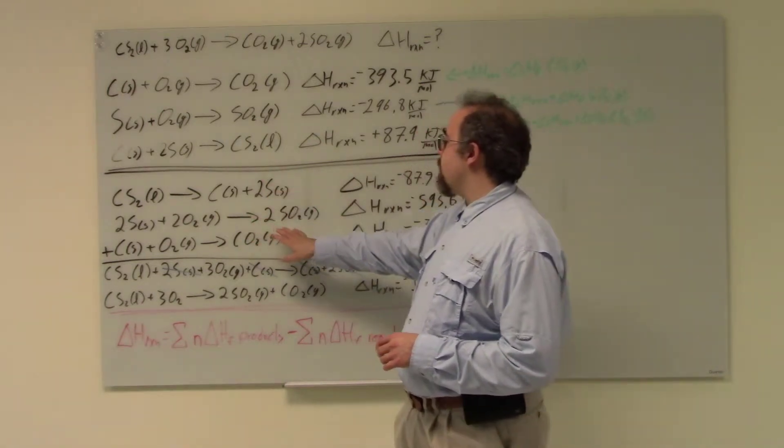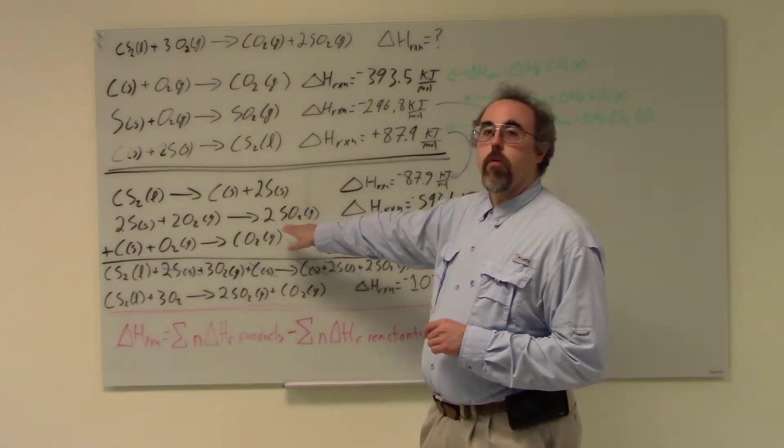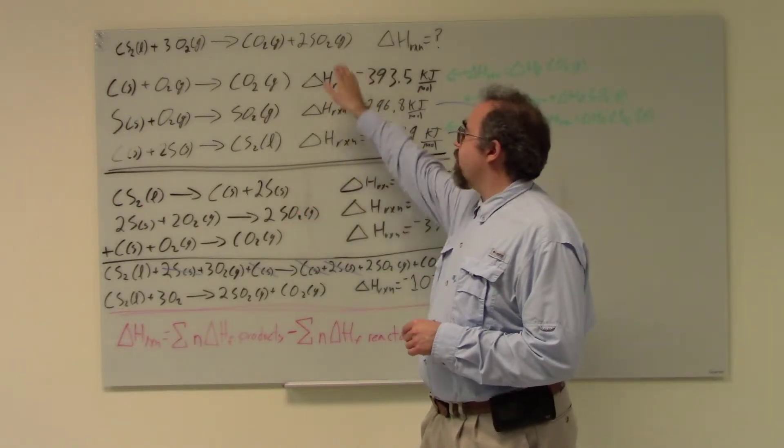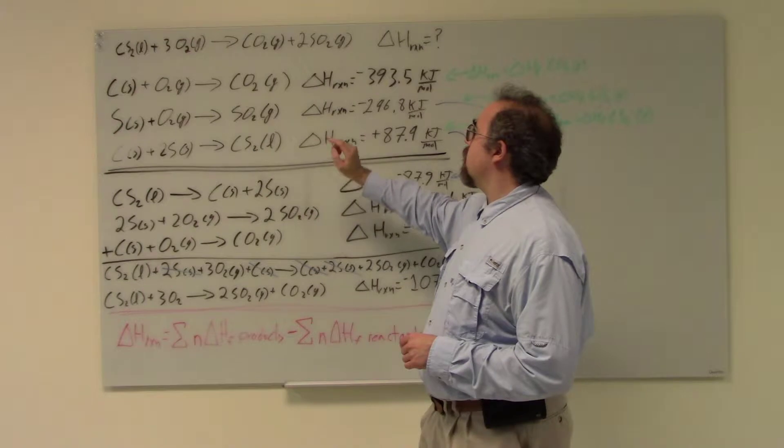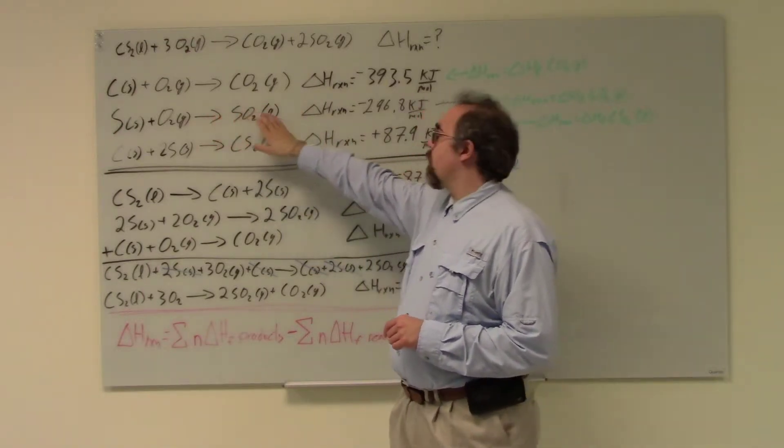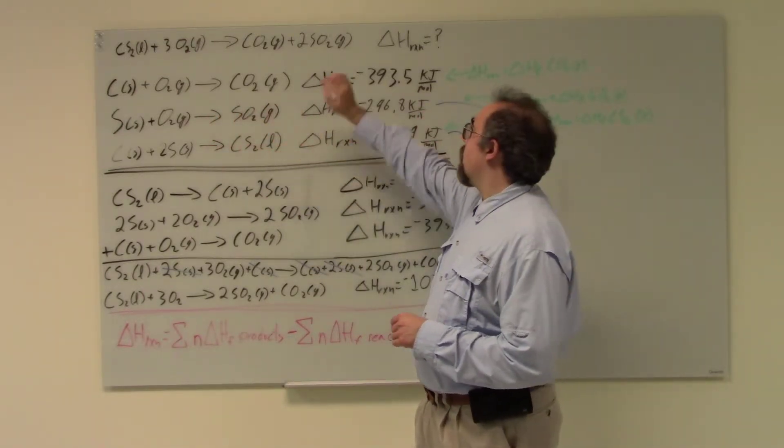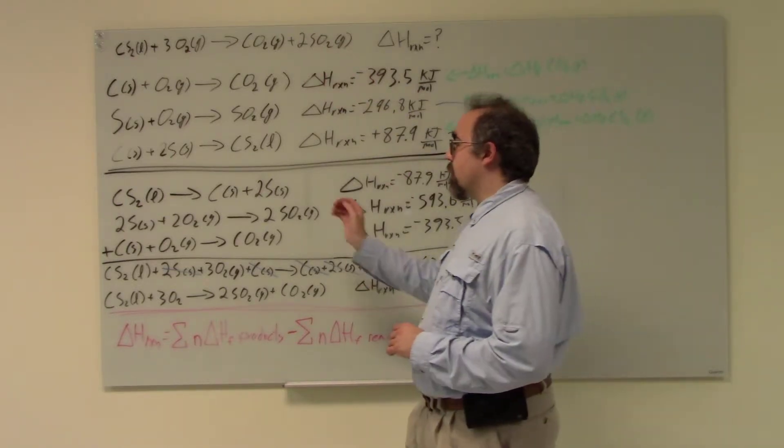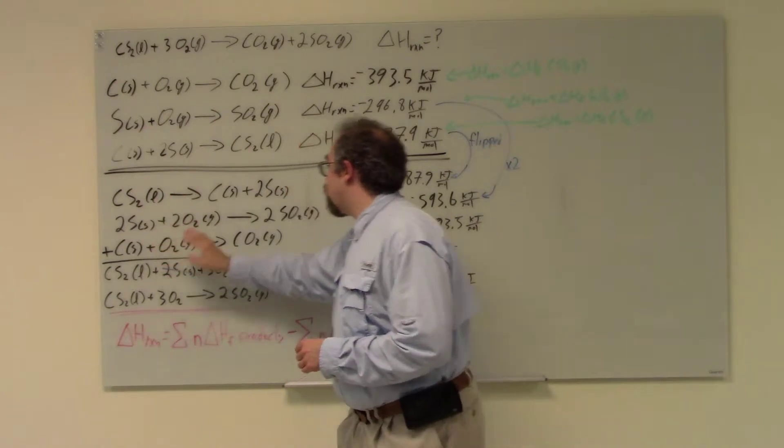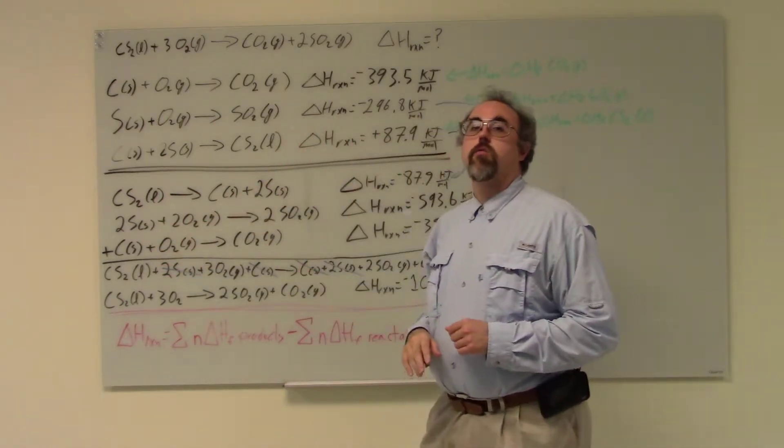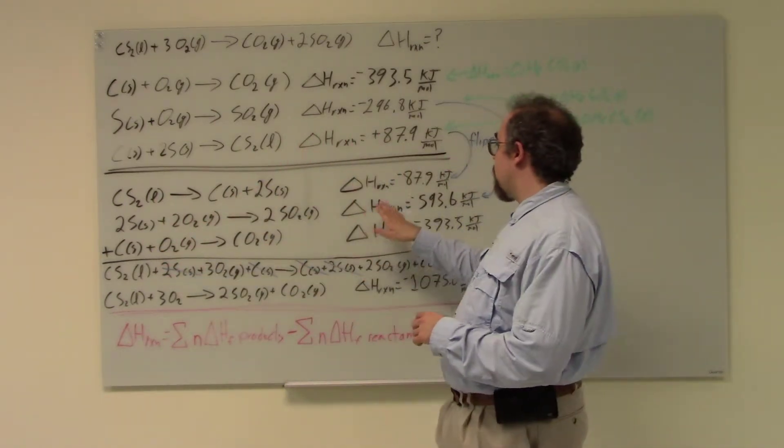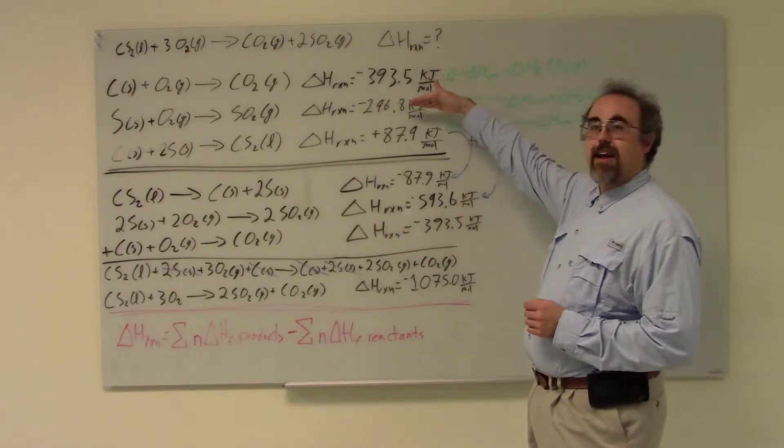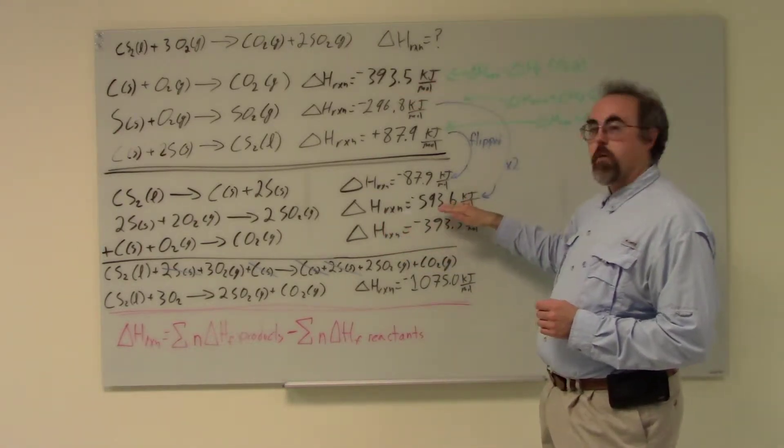Now let's look at this next one. I'm forming SO2, that's what I want to form. But you'll notice on this first reaction, I'm only forming one SO2 and I want to form two. So I'm going to multiply my reaction by two. So I'm going to have two sulfurs and two oxygens yielding two SO2s. And likewise, I'm going to multiply my heat of reaction by two.